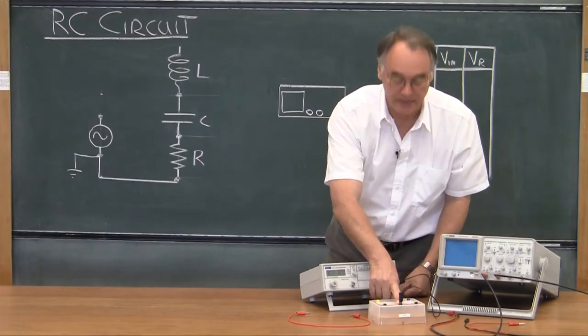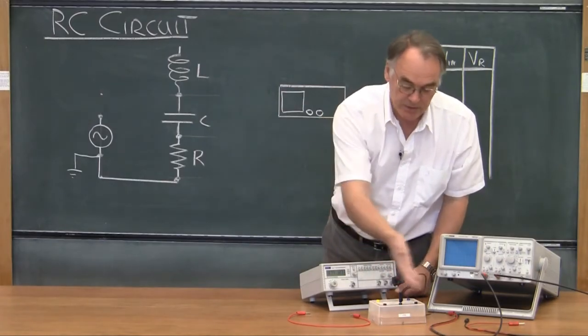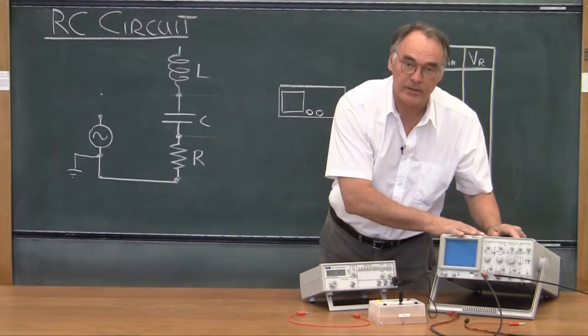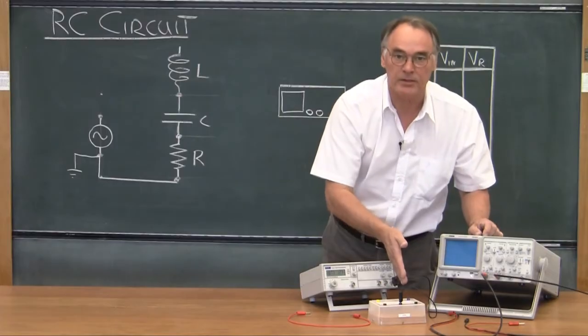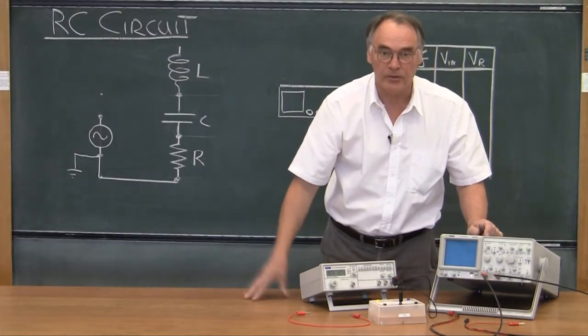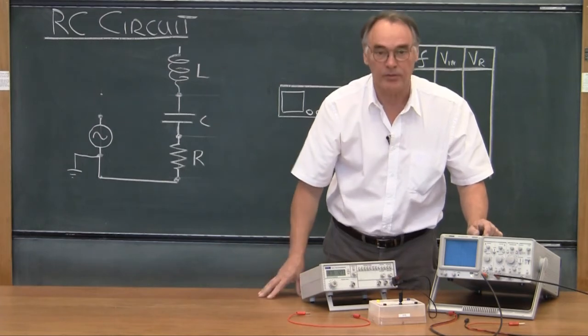The reason for doing that is I want to establish this ground point to make sure that the ground of the oscilloscope is connected to the ground of the function generator. Otherwise you're going to end up with an earth loop. If you don't know what an earth loop is, please make sure you find out.